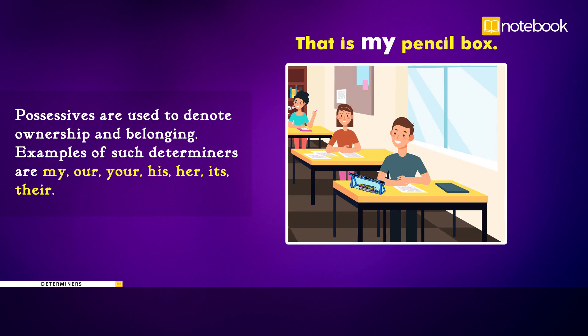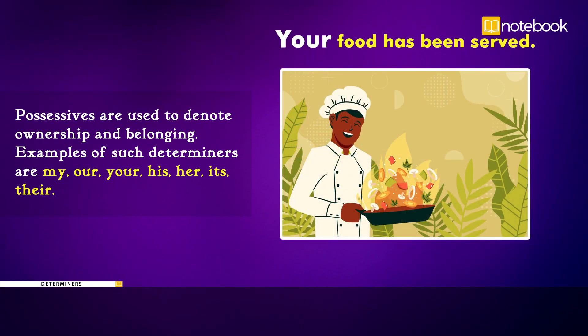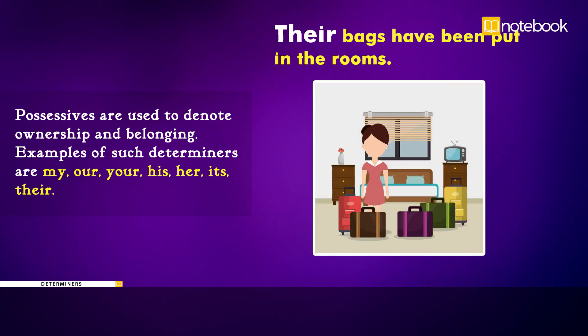Now we shall talk about the possessives. Possessives are used to denote ownership and belonging. Examples of such determiners are my, our, your, his, her, its, their. Examples: That is my pencil box. Your food has been served. Their bags have been put in the rooms.